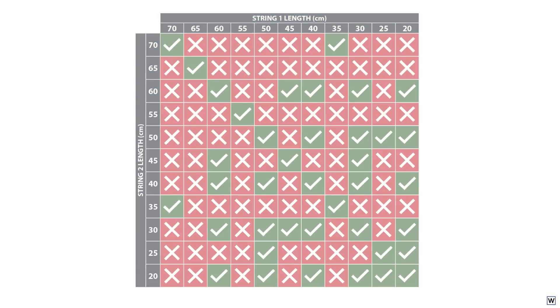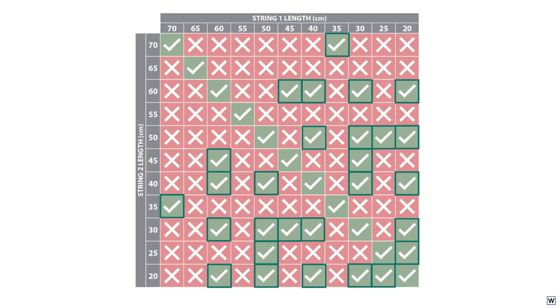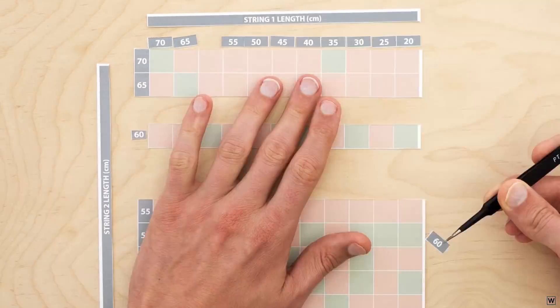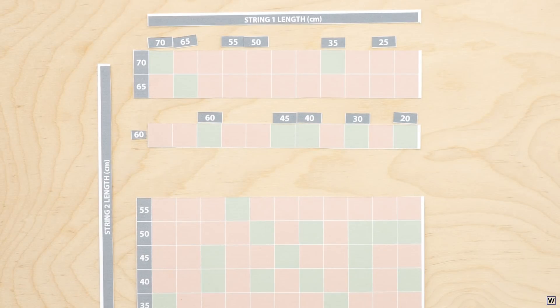Now what about our other pairs of strings that sound good together? If we look at the third row of our table, we see that our second string is fixed to a length of 60 centimeters. And the lengths of our first string that sound good with our second are 60, 45, 40, 30, and 20 centimeters.